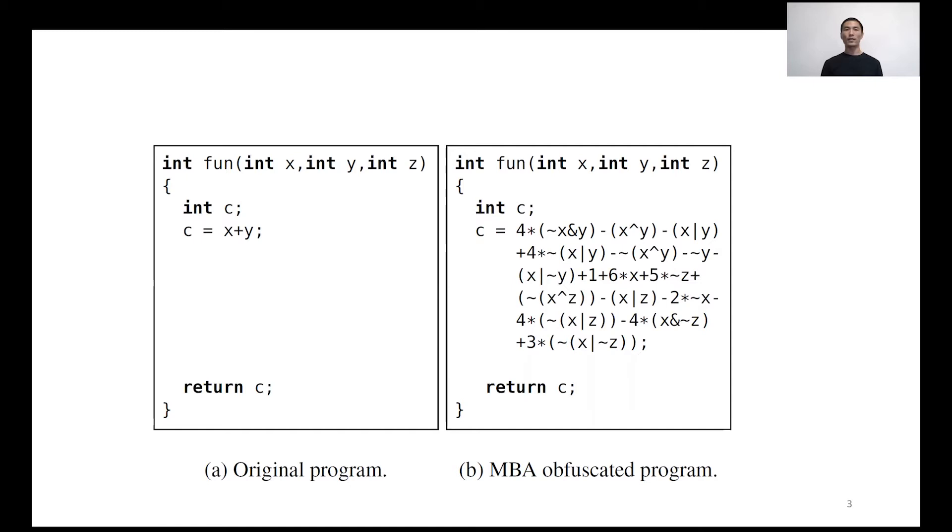However, on the right side, X plus Y is transformed into a complex MBA expression with an irrelevant variable Z. After MBA obfuscation, a human analyst has a harder time understanding the obfuscated form.